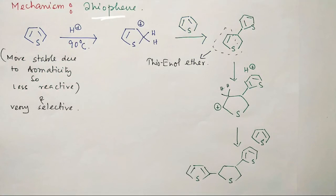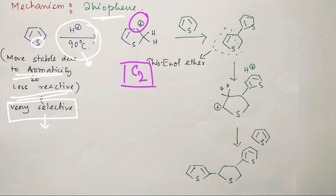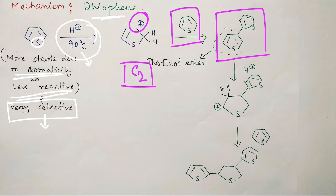Thiophene is relatively more stable because of higher aromaticity, and the heteroatom sulfur is reluctant toward protonation. Relatively drastic conditions compared to furan and pyrrole are essential — for example, 90°C. When a substrate is more stable it is less reactive, and less reactive means very selective. Its selectivity is mainly responsible for substitution, and C2 substitution is more favored because the carbocation at C3 is highly resonance-stabilized.